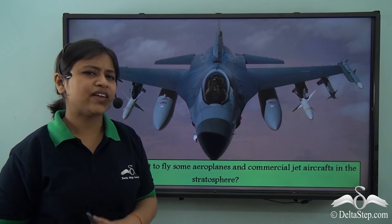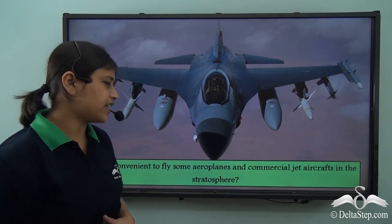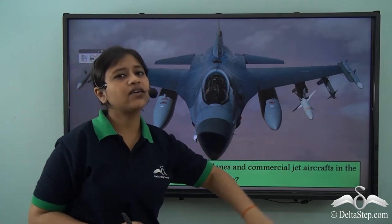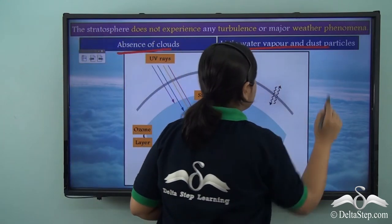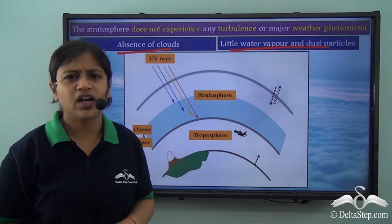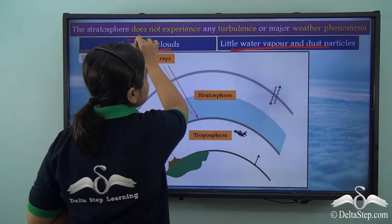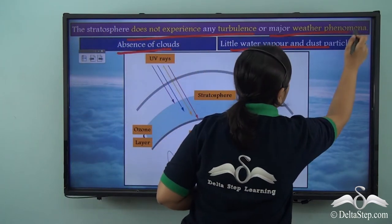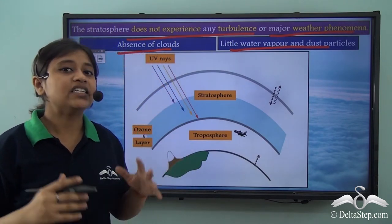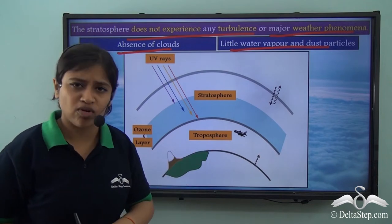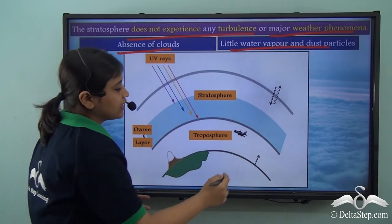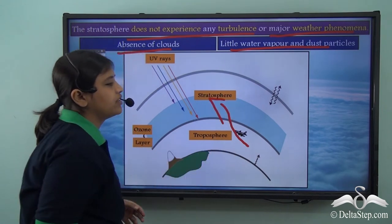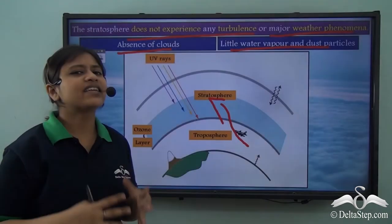It is convenient to fly aeroplanes and commercial jet aircraft in the stratosphere because of the absence of clouds and very little water vapour and dust particles in this layer. Because of this, it experiences no turbulence and weather phenomena do not occur here. Commercial planes and jets usually climb to the stratosphere where there is no turbulence and they can travel easily.